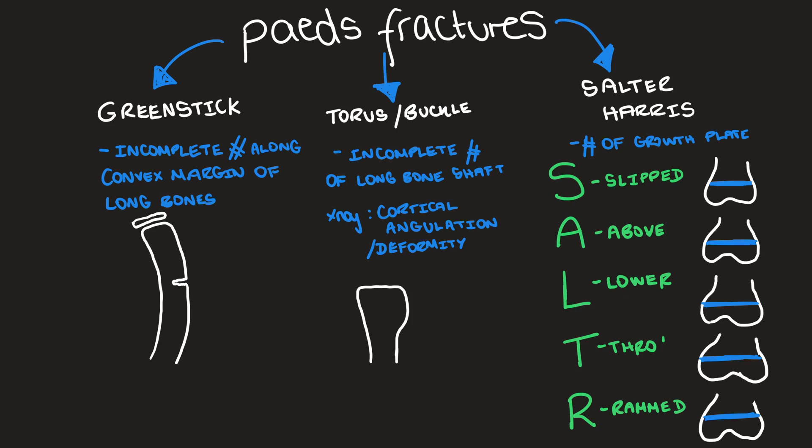Type 1 is slipped growth plate — the fracture goes through the growth plate itself. Type 2, A for above, goes through the growth plate as before but also goes through the metaphysis. This is the most common type of Salter-Harris fracture.